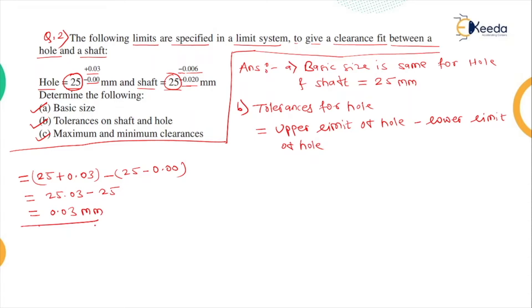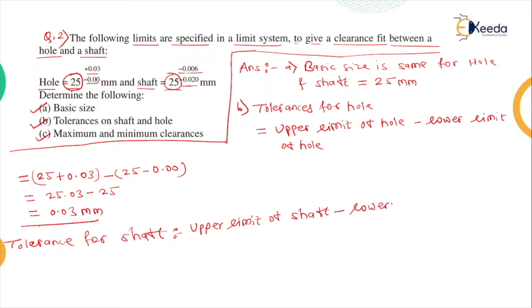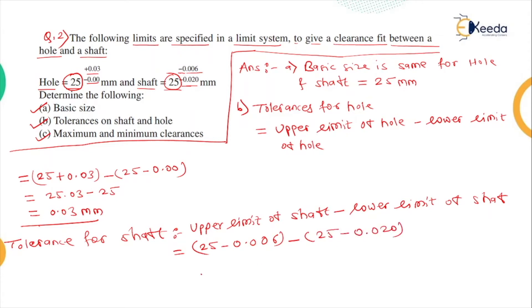That is the tolerance for the hole. Now we will find out the tolerance for the shaft — again upper limit of shaft minus lower limit of shaft. The upper limit is 25 minus 0.006, and the lower limit is 25 minus 0.020. So that is 24.994 minus 24.980, giving 0.014 mm. That is the tolerance on the shaft.